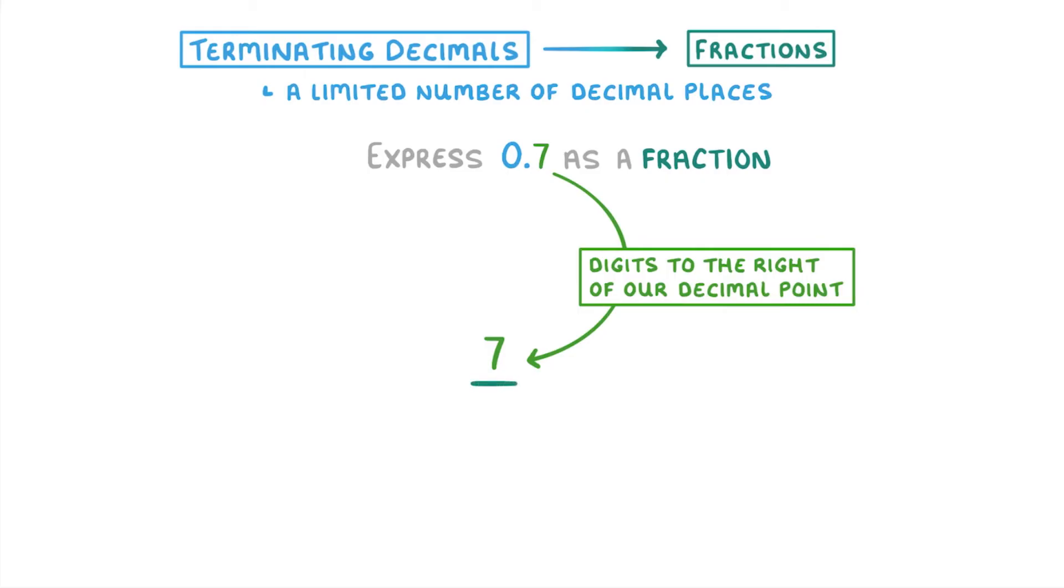Then for the denominator, we start by writing a 1, and then we have to work out how many zeros we have to add after that one. And the point to remember is that the number of zeros we use is exactly the same as the number of digits we have after the decimal point.